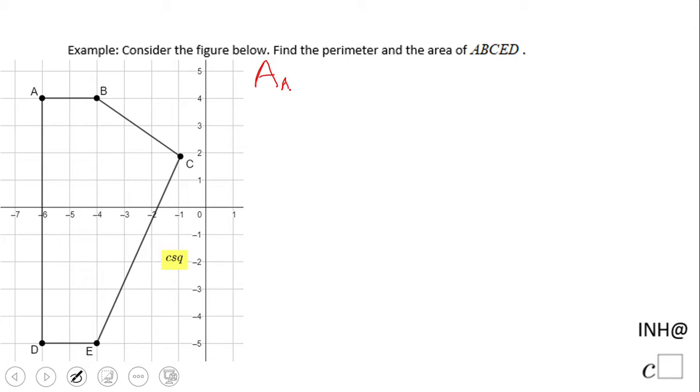Area of ABCED—how I call it. We're going to break it into parts. We're going to have a rectangle and a triangle. The rectangle is pretty easy: we have base times height.